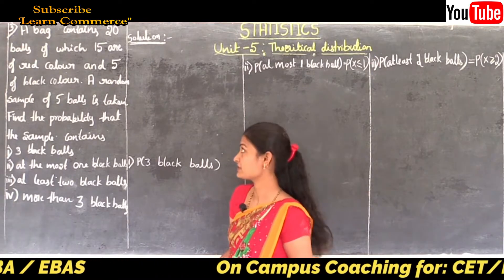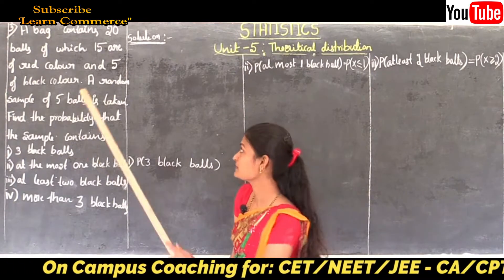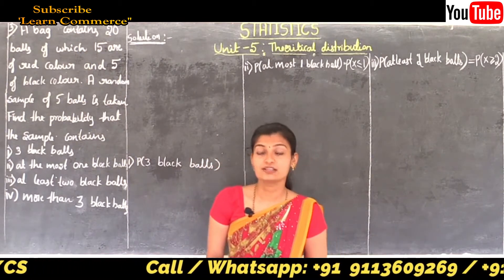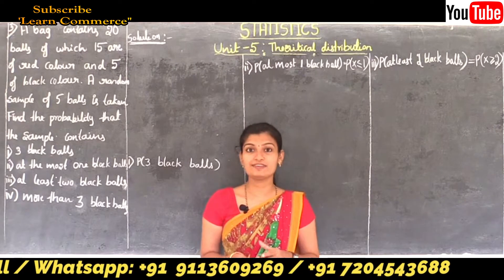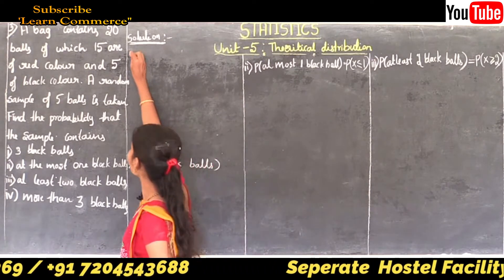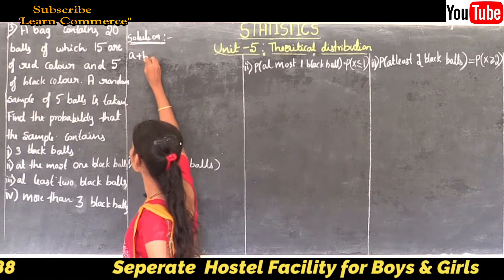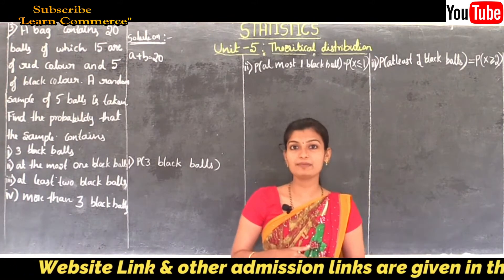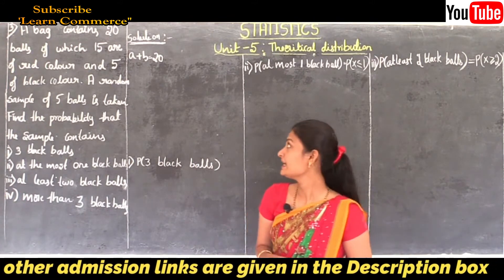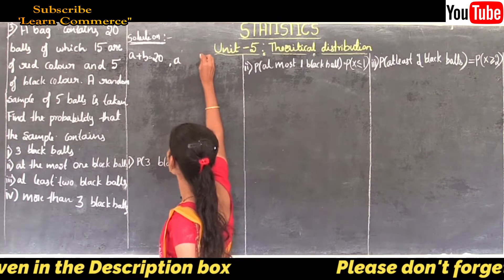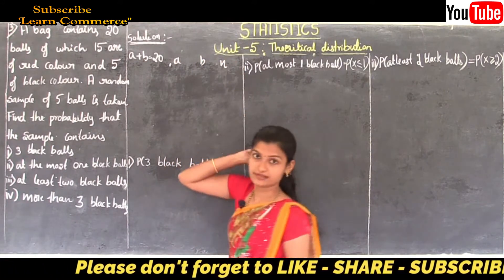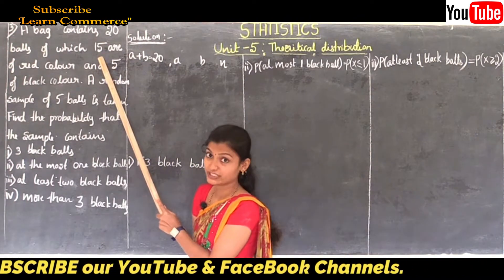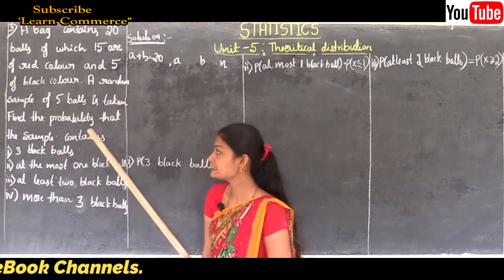Now let us see the solution. The first given observation is that the bag contains 20 balls, so the total number of balls is 20. We can write a plus b equals 20. This is a hypergeometric problem, so we know the parameters of the hypergeometric distribution: a, b, and n.